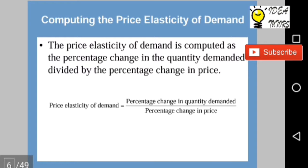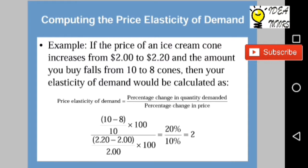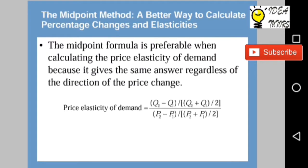The price elasticity of demand is computed as the percentage change in the quantity demanded divided by the percentage change in price. For example, if the price of an ice cream cone increases from $2 to $2.20 and the amount you buy falls from 10 to 8 cones, then your elasticity of demand would be calculated as shown. The midpoint formula, shown below, is preferable when calculating the price elasticity of demand because it gives the same answer regardless of the direction of the price change.